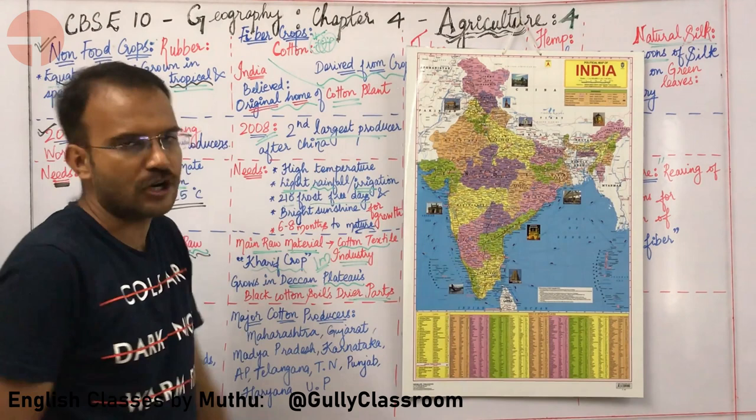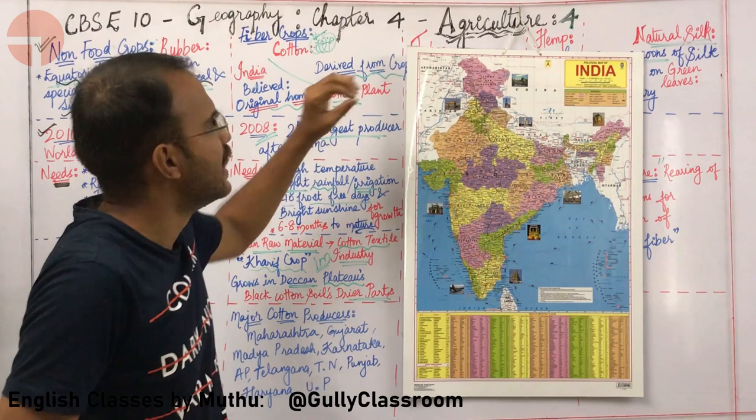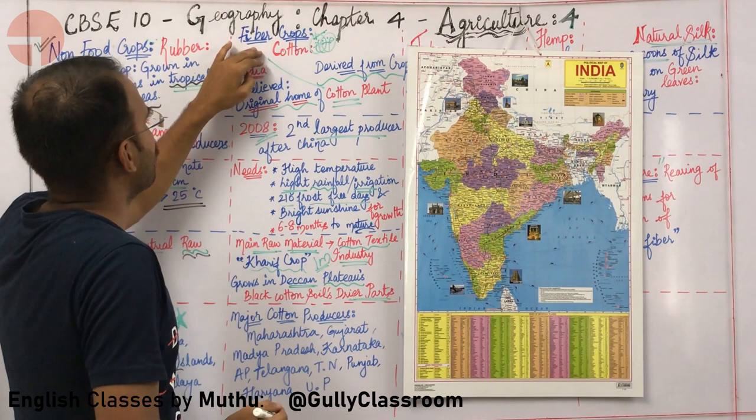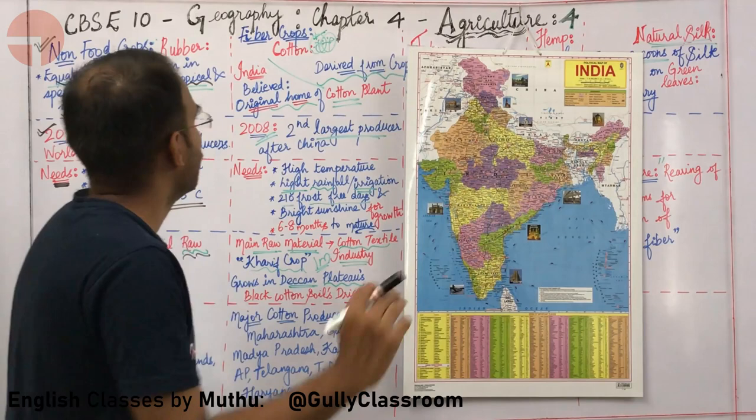What about fiber crops? There are two types: fiber crops derived from plants growing in the soil, and fiber obtained from animals — namely the silkworm. Fiber crops can be obtained from crops like cotton, jute, and hemp.